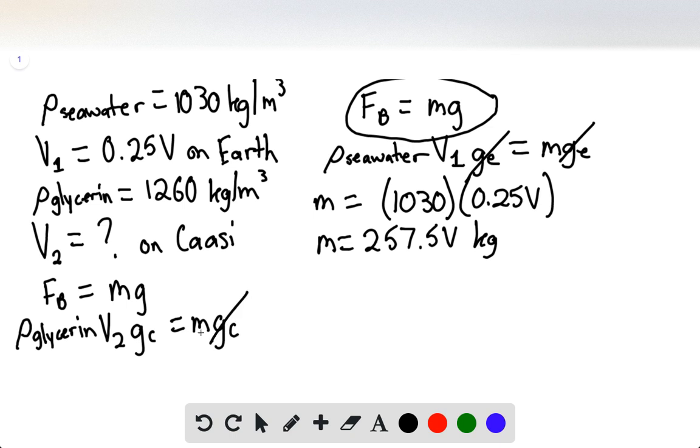So this can be canceled out, and we're finding V2. So V2 can simply be the mass divided by the density of glycerin.